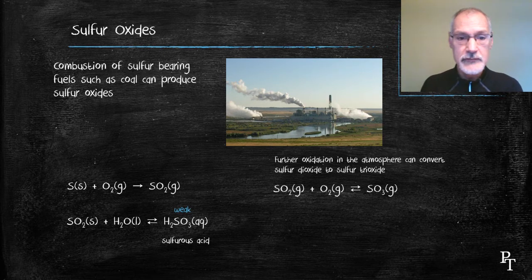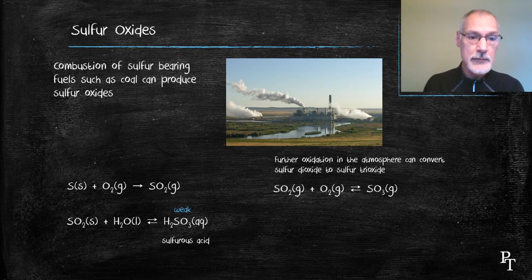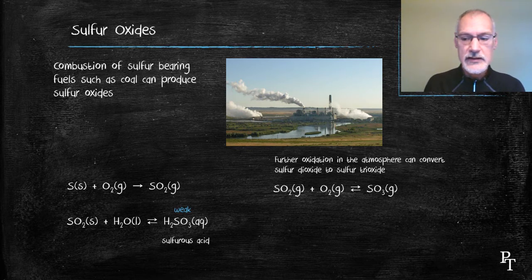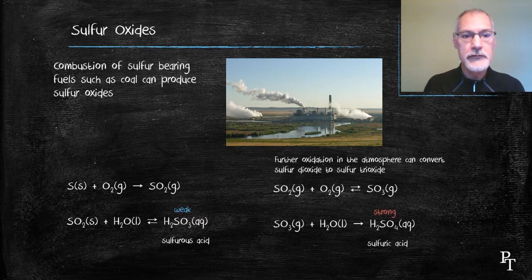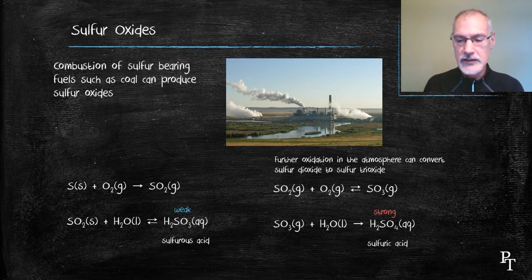But it's also possible for sulfur dioxide to be converted in our atmosphere in UV light to sulfur trioxide. When that combines with water, we produce sulfuric acid, a much stronger acid.